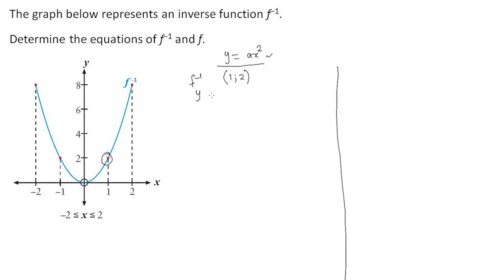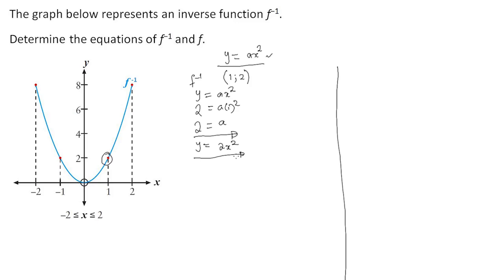We have y equals ax squared, so substituting y equals 2 and x equals 1 gives us a equals 2. So the equation for the inverse function is y equals 2x squared.